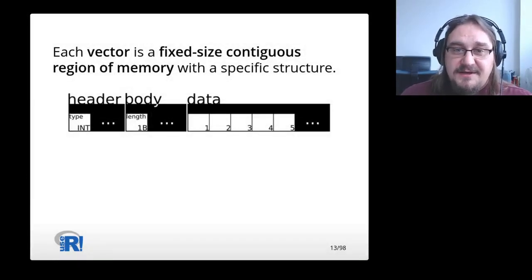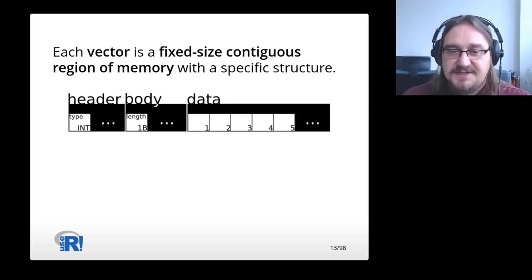Each vector is a fixed-size contiguous region of memory with a specific structure. It has a header that contains meta information about the vector, for instance, the type of its elements. It has a body that mostly contains the information about the vector's length. And then it has a region of data where the individual values of all of the elements are stored.